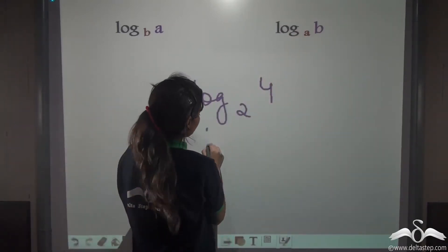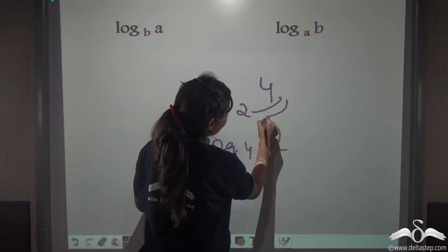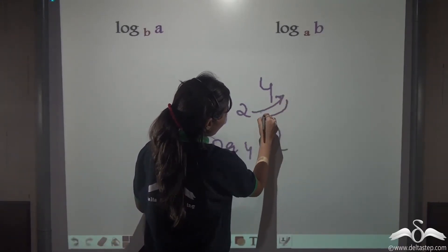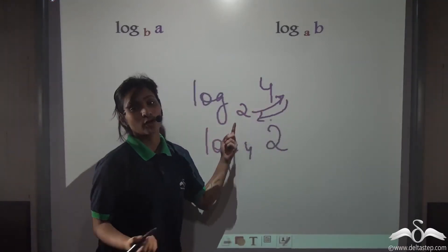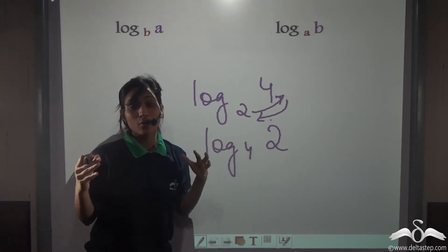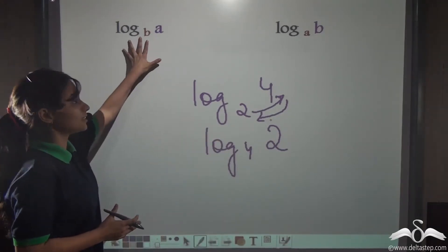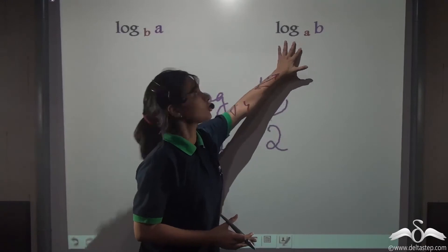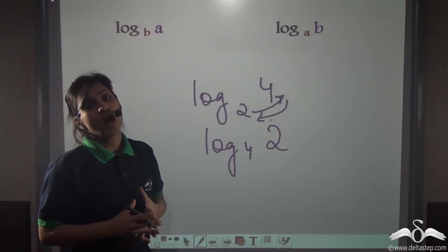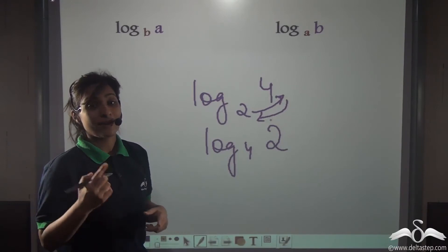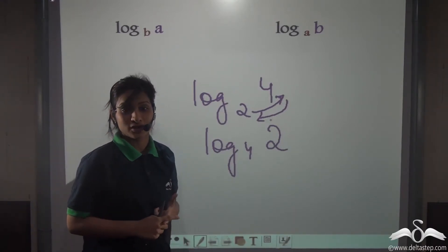For example, log 2 to the base 4 — they interchange their places. This is a very easy number; you can even tell that yourself. But suppose if it is a big number and you are given one form and asked to find the other just with whatever is given — then how will we do that? There is one formula known as the reciprocal formula for such situations.